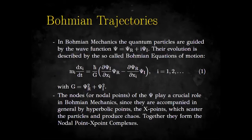As a refresher on Bohmian trajectories: Bohmian quantum mechanics is an alternative interpretation of quantum mechanics where quantum particles, besides being described by the usual Schrödinger equation, are also described by their positions. In Bohmian mechanics, the quantum particles are guided by the wave function — the solution of Schrödinger's equation — and their evolution is described by the so-called Bohmian equations of motion.